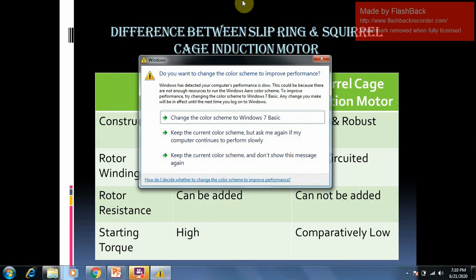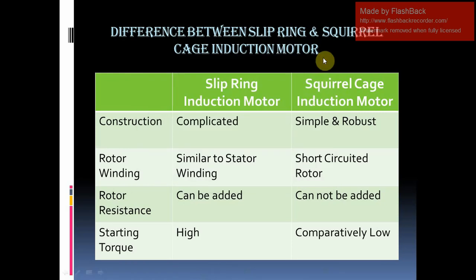The second point is the rotor winding. In case of slip ring induction motor, the rotor winding is similar to the stator winding. In case of squirrel cage induction motor, it is a short circuit rotor with end rings.